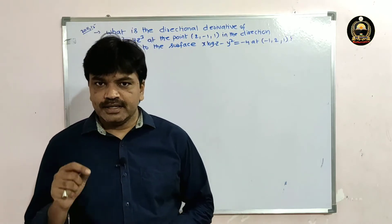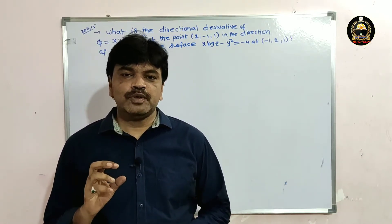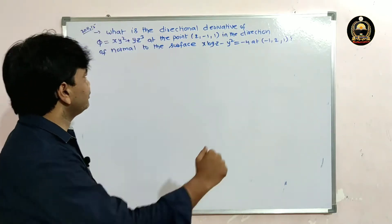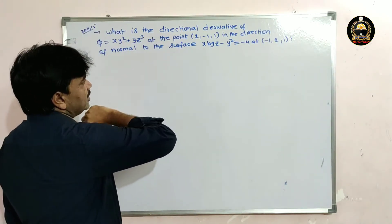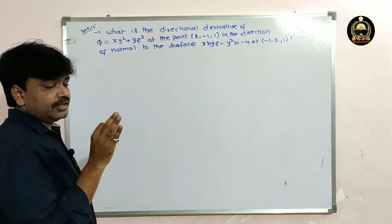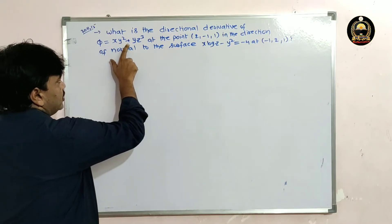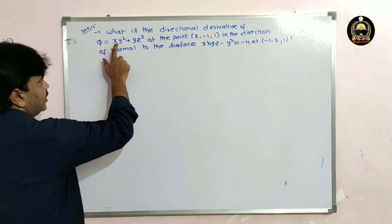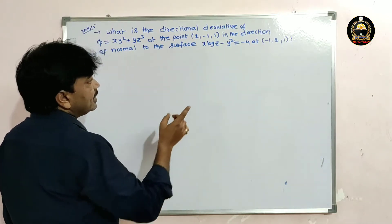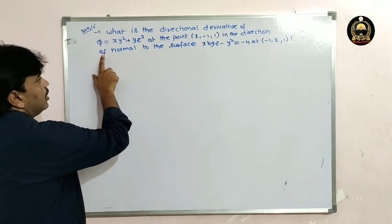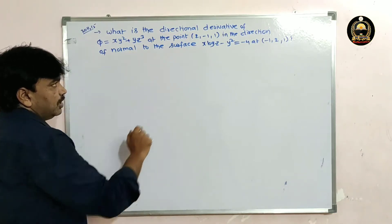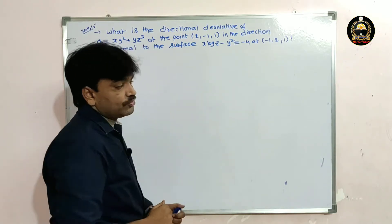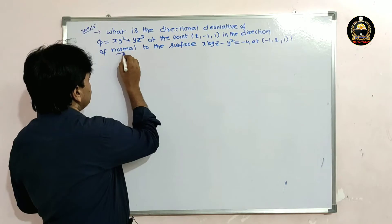Good morning friends. In this lecture I'm going to solve a problem on directional derivative — a slightly different problem. The directional derivative of phi equals xy² + yz³ at the point (2, -1, 1), in the direction of the normal to the surface x·log(z) − y² = −4 at the point (−1, 2, 1). This is an important point.